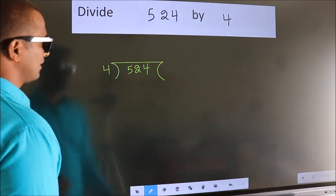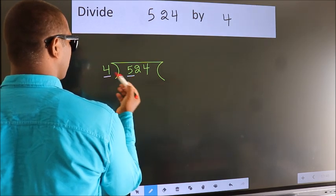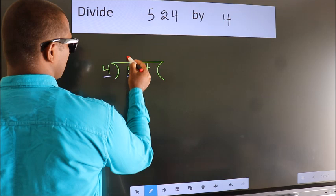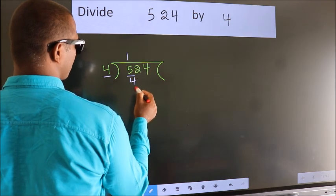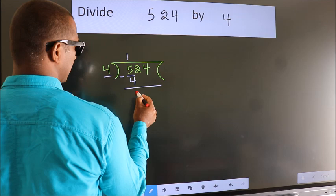Next, here we have 5 and here 4. A number close to 5 in the 4 times table is 4 once, which is 4. Now we should subtract. We get 1.